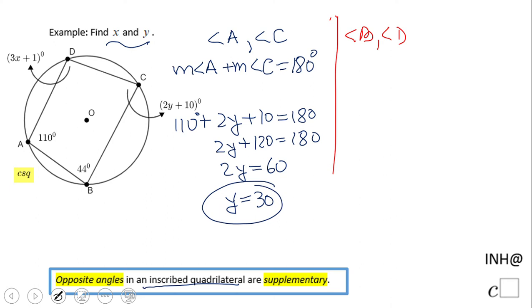Let's go to find the value of X. Like I said, we're going to write the other statement that shows these angles are supplementary. Measure of angle B plus the measure of angle D equals 180. So we're going to have 44 plus 3X plus 1 equals 180.